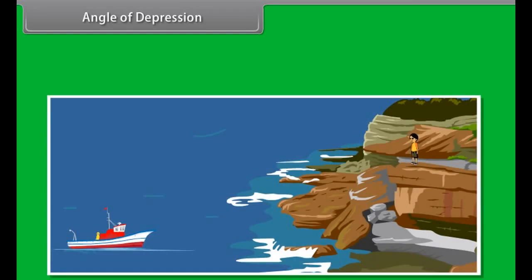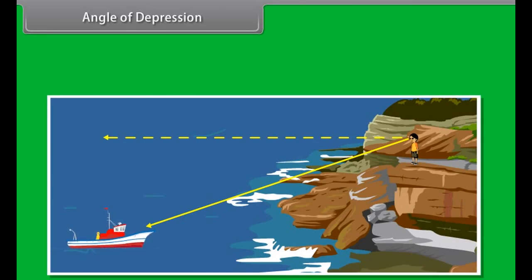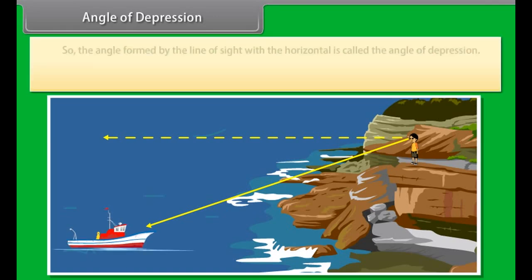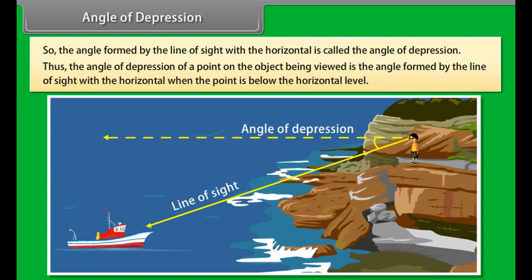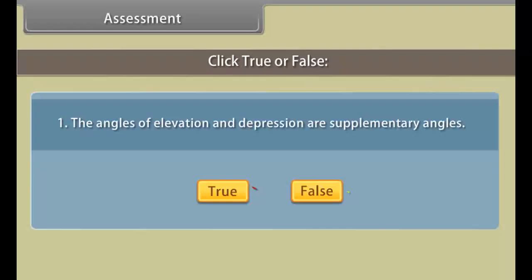Now consider the situation when a boy is standing at the cliff and is looking down at the boat. Here the line of sight is below the horizontal level, so the angle formed by the line of sight with the horizontal is called the angle of depression. Thus, the angle of depression of a point on the object being viewed is the angle formed by the line of sight with the horizontal when the point is below the horizontal level.